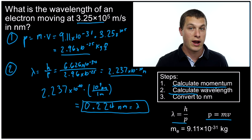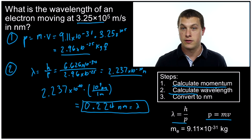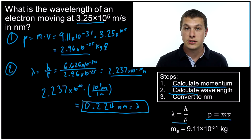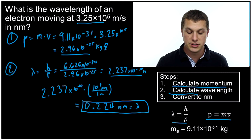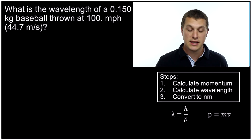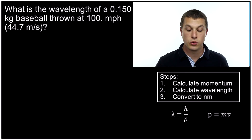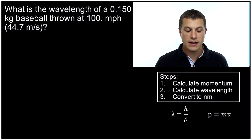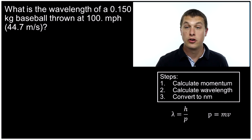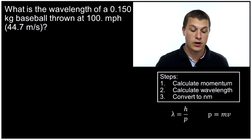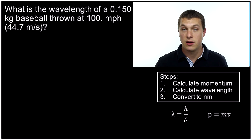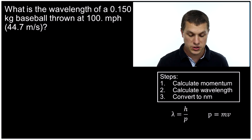So this is weird — why don't we look around the world and notice that particles have a wavelength? Well, it turns out wavelengths get smaller and smaller as objects get bigger. One way we can see that is to do a calculation for a larger object, say a baseball. This problem asks: what is the de Broglie wavelength of a 0.15 kilogram baseball thrown at 100 miles per hour? I've gone ahead and converted that to meters per second, which is about 44.7 meters per second.